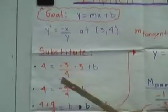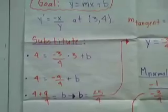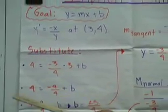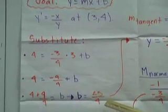As you can see, I plugged in my y, my m tangent, and my x. This is basic algebra. All you do is multiply, subtract x to the other side, and you get your b which is 25 over 4.